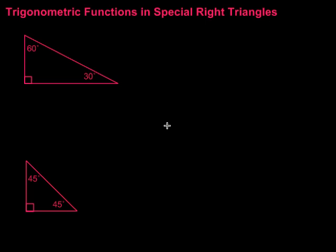In this video, we're going to take a look at trigonometric functions in a couple of special types of right triangles. The two special right triangles are the 30-60-90 triangle and the 45-45-90 triangle. It turns out that the 30-60-90 triangle is always in the ratio of side lengths 1, 2, and the square root of 3.